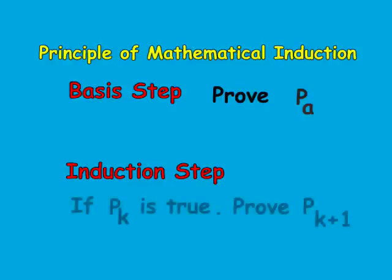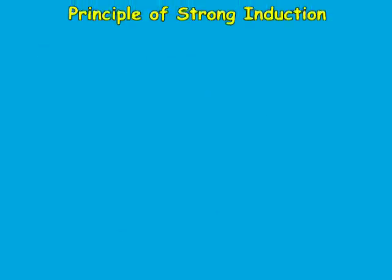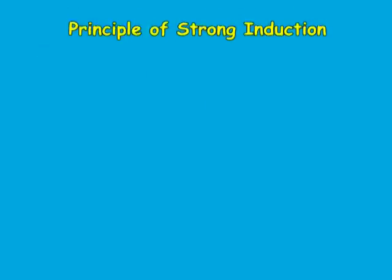We derive from here that p sub k plus 1 is also true. Then p sub k is valid for all k greater than or equal to a natural. Formulating the principle this way allows us to solve those cases where the property may not be valid for all natural numbers. Still, this is not sufficiently strong to prove some mathematical propositions.